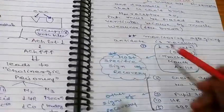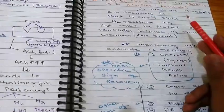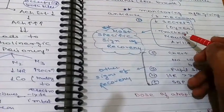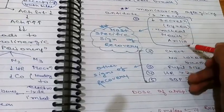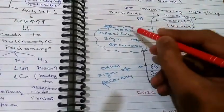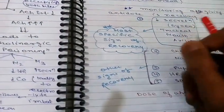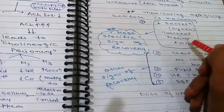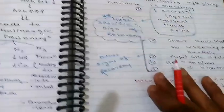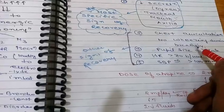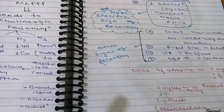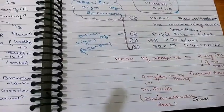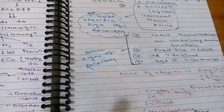After giving atropine, very good monitoring is needed. Signs of improvement to look for: decreased secretions in the trachea, mouth, and axilla — these are the most specific signs of recovery because we are blocking the cholinergic system with atropine. The second sign is chest auscultation — there should be no wheezing sound during breathing, since bronchoconstriction should be resolving. Also look for pupil dilation, heart rate more than 70 bpm, and systolic blood pressure more than 100 mmHg.